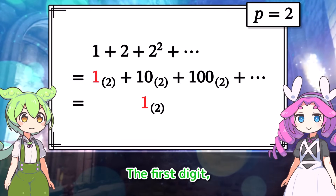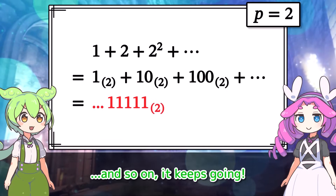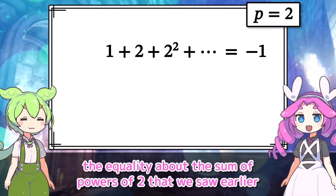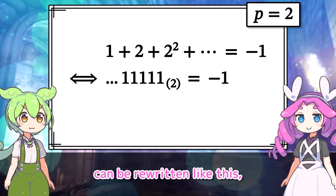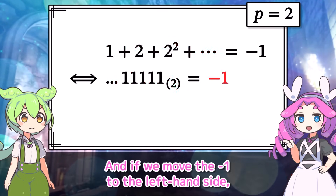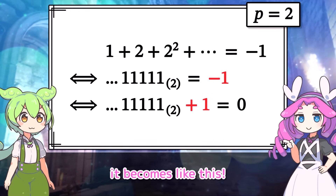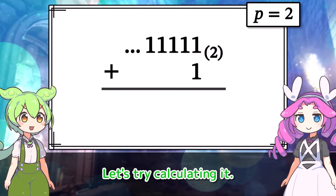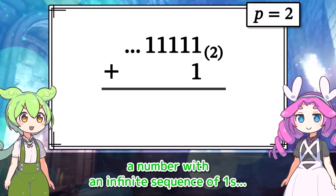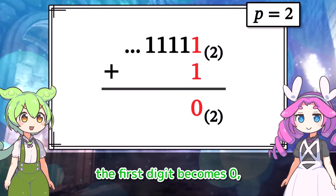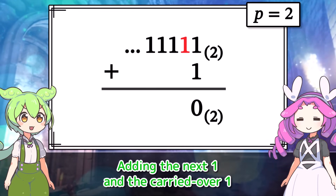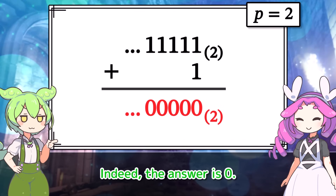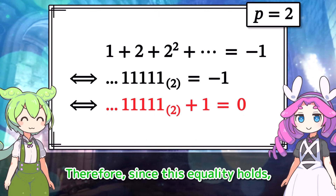So the first digit, the second digit, the third digit, and so on — the ones continue indefinitely to the left. Based on this result, the equality about the sum of powers of two can be rewritten. Because we know these two expressions are equal, and if we move the negative one to the left-hand side, it becomes like this. So if we can prove this equality, we can also prove the original equality. Let's try calculating it. When you add 1 to a number with an infinite sequence of ones, the first digit becomes zero and one is carried over. Adding the next one and the carried-over one makes it zero again and carries over one. Since this continues infinitely, indeed the answer is zero. Therefore, since this equality holds, this original equality also holds.